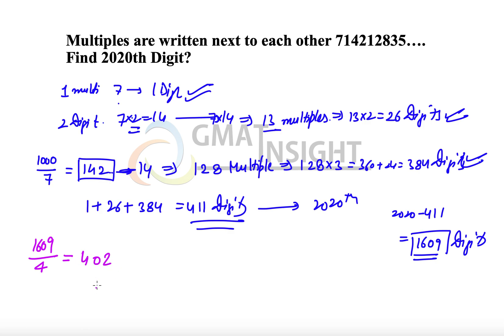That means 403rd multiple will give us the 2020th digit, and the 403rd multiple will have 4 digits, and the leftmost digit in that case will be the 2020th digit here. So 403rd multiple, let's quickly calculate. So 403rd multiple we have to reach, and we have 142 multiples beforehand which are running into either 1 digit, or 2 digit, or 3 digit.